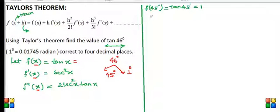Thereafter f dash 45 is sec square 45, that is equal to root 2 whole square, that is 2.